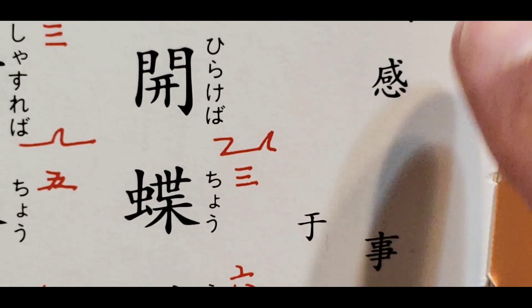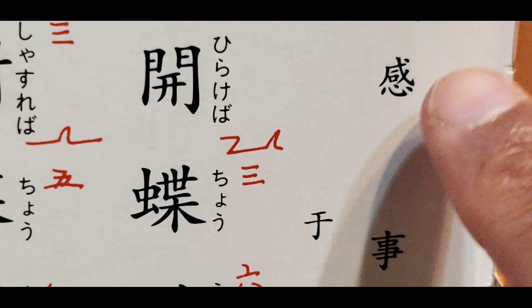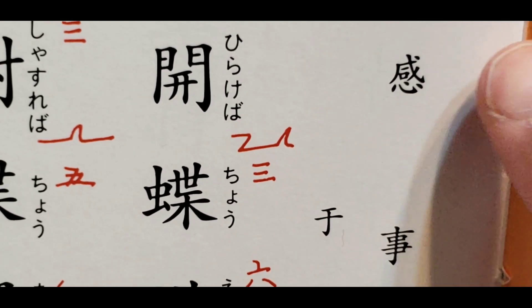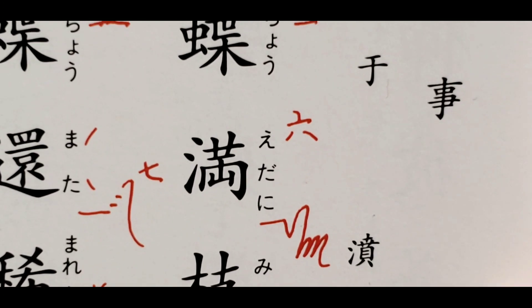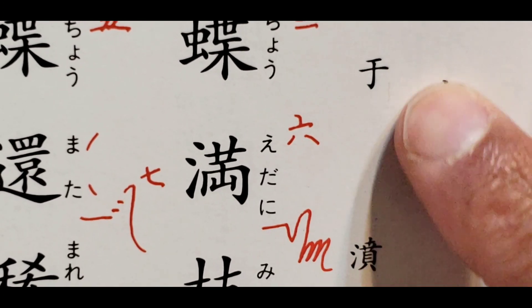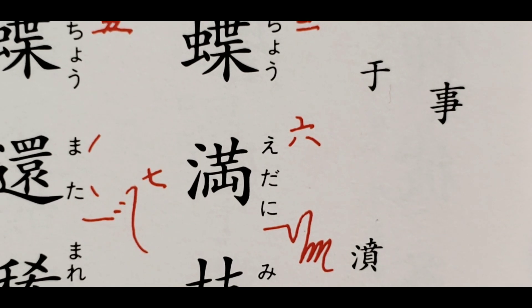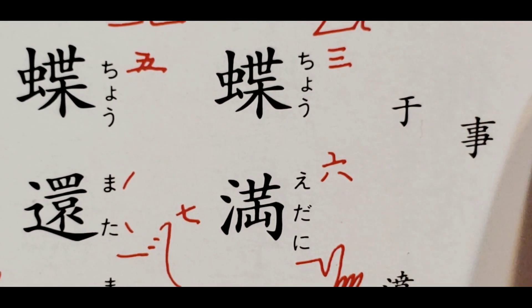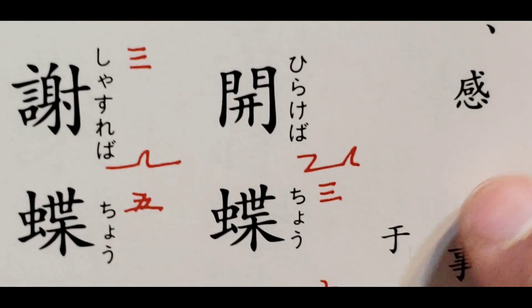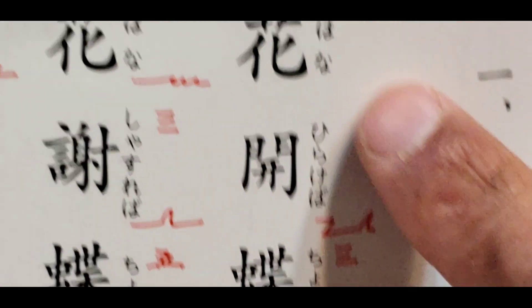And then here on the side we have the Japanese reading. The title is called Kotoni Kanzu. And the Ni is like a Japanese particle but it's not actually in here. So this is just written with the kanji and it's called Ufun, which is the name of the author, which I think was a Chinese person.